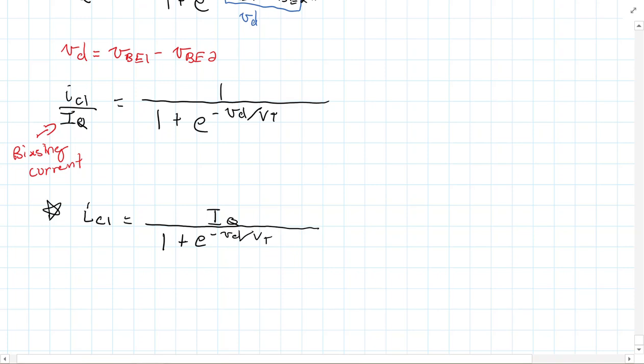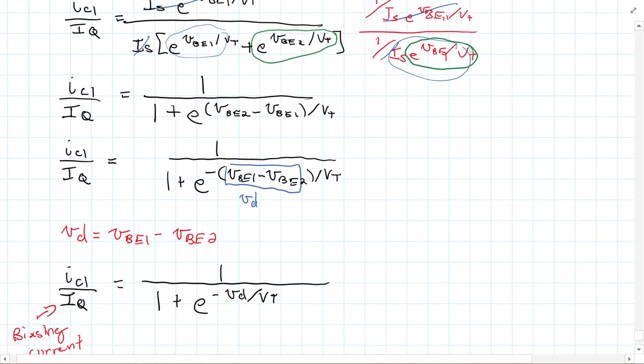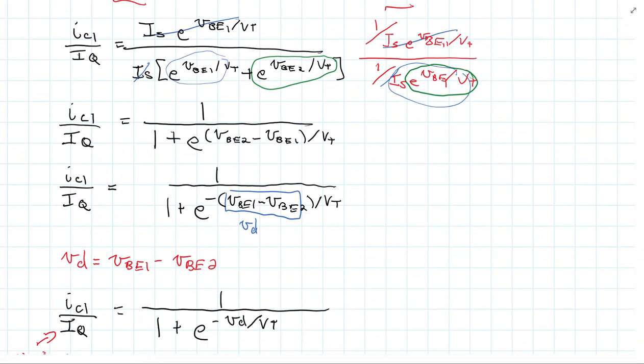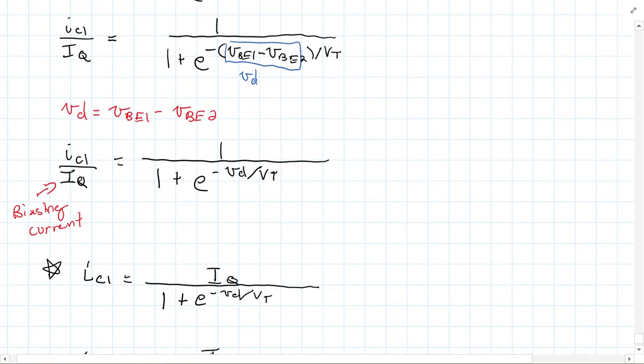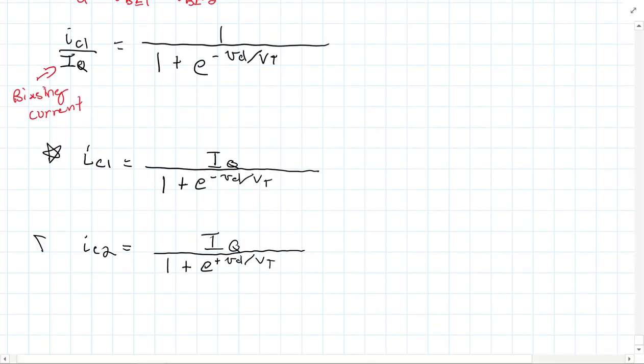Now doing almost the exact same kinds of arguments here, what we get for IC2 then is almost the exact same. I encourage you to go through the computation yourself to verify it, but you would get E to a positive VD divided by VT. And that's why it's going to be positive, because at this step here, it's going to be VBE2 as opposed to the VBE1. So we'd have VBE1 minus VBE2 already set up in the denominator, so that's why it would be positive. But now what do we have here? We have our goal. We have IC1 and IC2 in terms of VD.